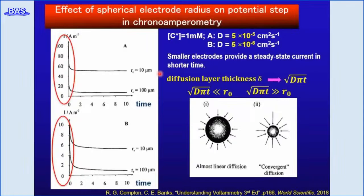The diffusion layer thickness, delta, is defined by these equations. For the larger electrode, the diffusion layer thickness is smaller than the electrode radius, so linear diffusion is dominant, and the current decreases rapidly by the expansion of the diffusion layer toward the bulk. On the other hand, for a microelectrode, spherical convergent diffusion occurs actively, which induces steady-state mass transfer from the bulk solution.